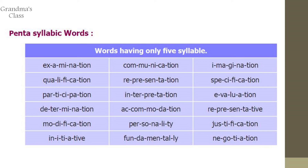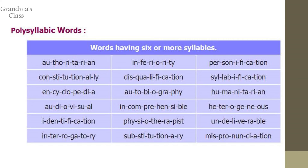Next one is polysyllabic words — words having six or more syllables. First word: authoritarian — au-thor-i-tar-i-an. Next word: inferiority — in-fe-ri-or-i-ty. Next word: personification — per-son-i-fi-ca-tion. These are six or more syllable words.